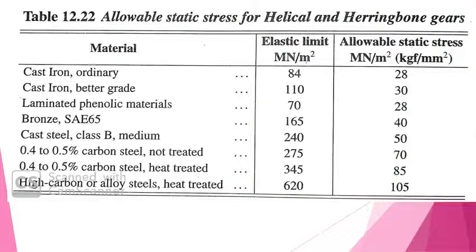Table 12.22 is used to take the value of the allowable static stress. From this table, for 0.4–0.5% carbon steel untreated, the allowable static stress is 70 MN/m². For high grade cast iron, the allowable static stress is 30 MN/m².